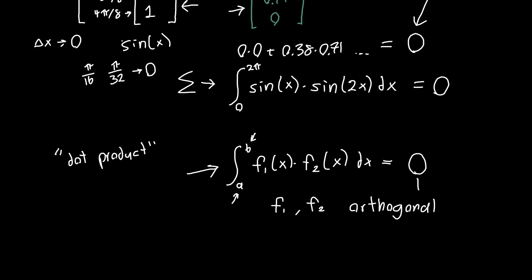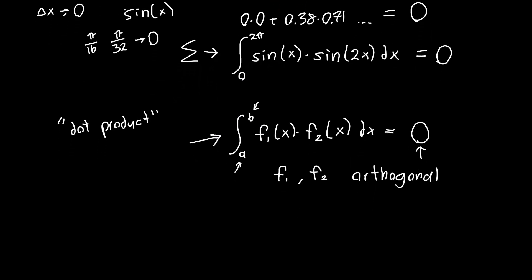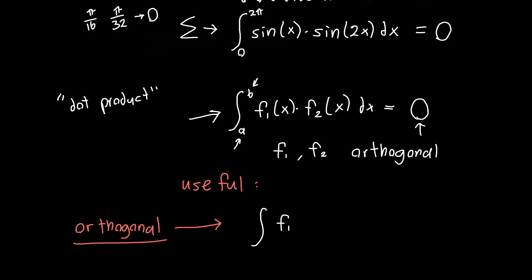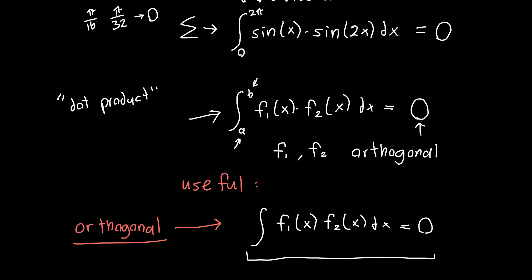If the dot product — or inner product — of two functions is equal to 0, then they are orthogonal. Where this becomes really useful is if we know ahead of time that the functions are orthogonal — using some theorems or tricks — then we know their integral over that region is 0. This property will allow us to deal much more easily with the Schrödinger equation, because we'd like to set as many things equal to 0 as possible before even starting any computation, and function orthogonality is what's going to allow us to do that.